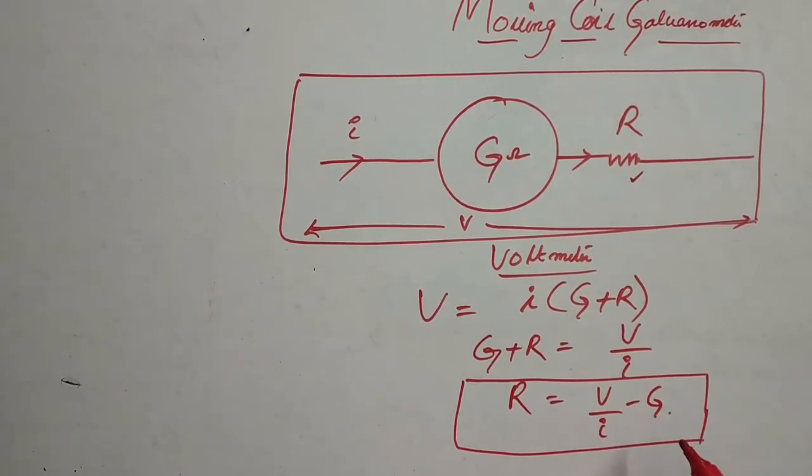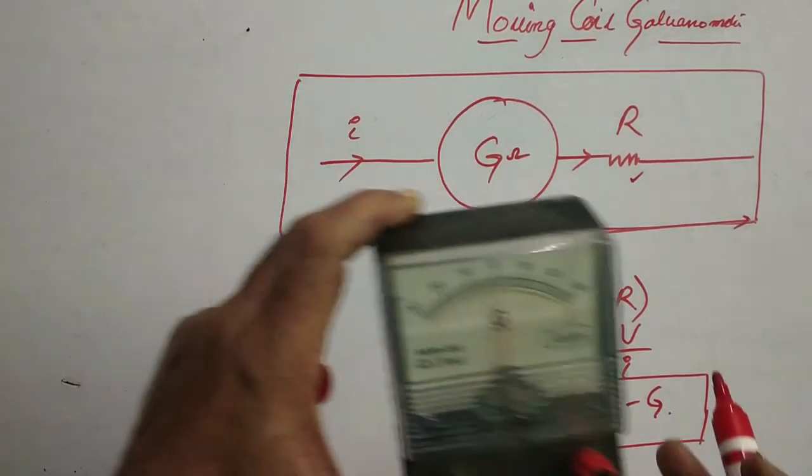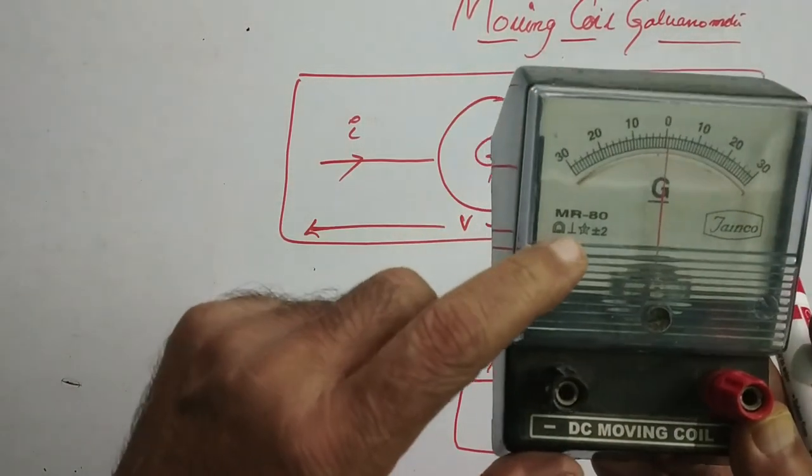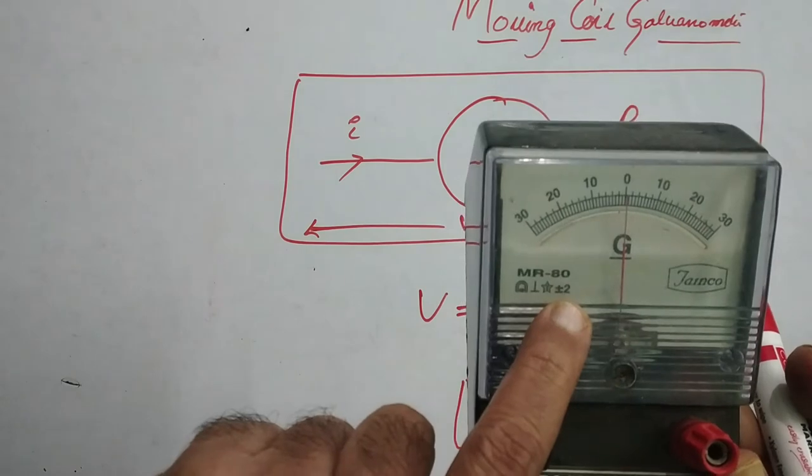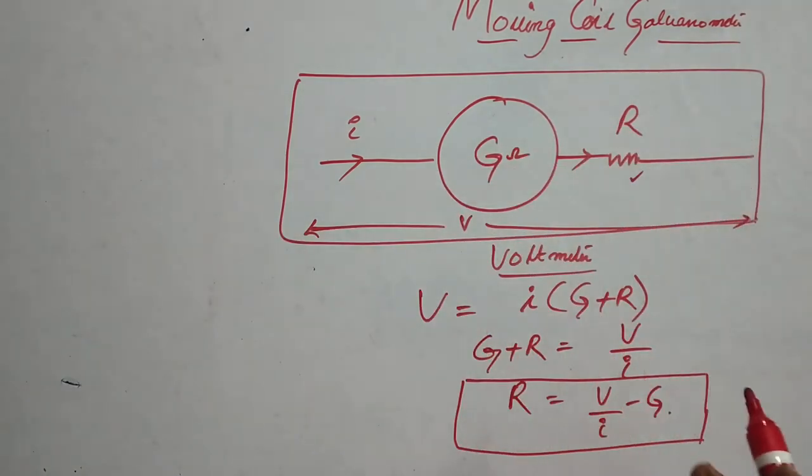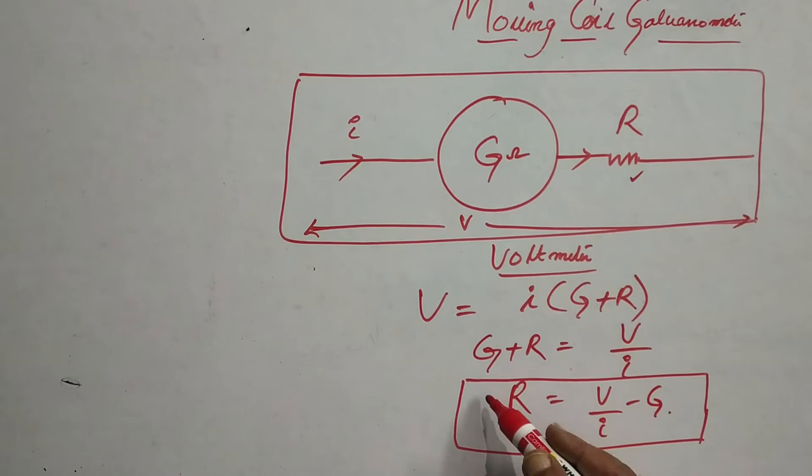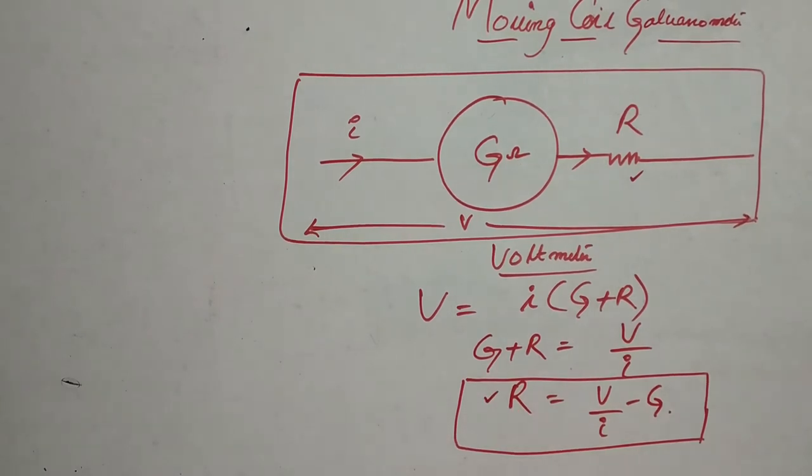The value of G is nothing but the resistance of the galvanometer. You can find out, you can see directly here, 80 ohm. So by substituting all these things, you can find out the value of R.